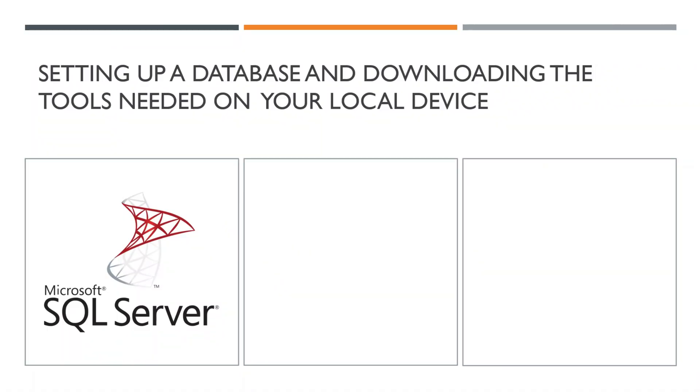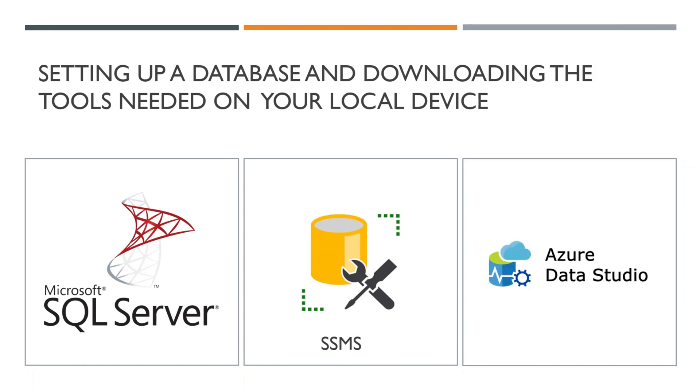To start writing SQL, we need to set up a database on our local system by downloading the required tools. You basically need three tools for this course, though you can also add a fourth one to query your data and design schemas. The first tool is SQL Server, which is the database itself. The second is SSMS, SQL Server Management Studio, which is the editor for writing queries. We're also going to download Azure Data Studio, another editor that lets you write code, query databases, and work faster.